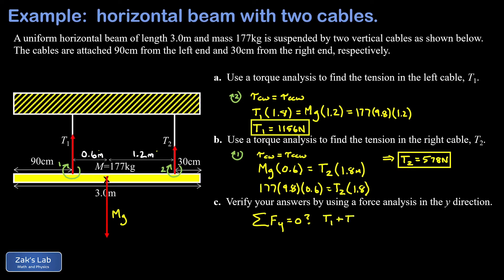Symbolically, we're asking if T1 plus T2 minus mg equals zero. We plug the numbers in: for T1 I had 1156 newtons, keeping in mind this was rounded a little bit, and for T2, also rounded a little bit, 578 newtons. The mass of the beam was 177 kilograms, and then g, 9.8 meters per second squared, which itself is rounded a little bit.